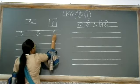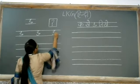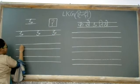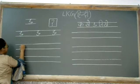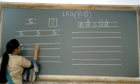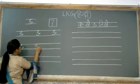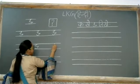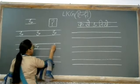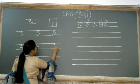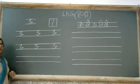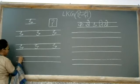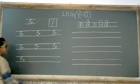इमली लिखा था ना हमने — इसे इमली में हम लोग टेल निकालते थे, बस इसमें टेल नहीं निकालनी है, सीधा ही लिखना है। छोटी सी स्टैंडिंग लाइन, सीधा C, उल्टा C, हेड पे कैप, और यहाँ पे बनाएंगे हम बिंदी।